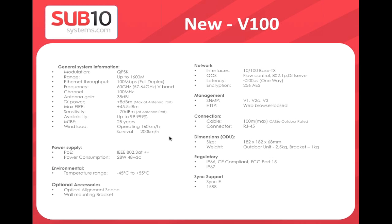The V100 antenna gain is 38 dBi, maximum transmit power at the antenna port is 8 dBm, giving approximately 45–46 dBm total EIRP. Receive sensitivity is around -70 dBm, providing plenty of link margin. You don't need to memorize these values — they're programmed into the link calculator. You specify location and link length, and the system calculates availability. Power consumption is around 28 watts, using PoE++.